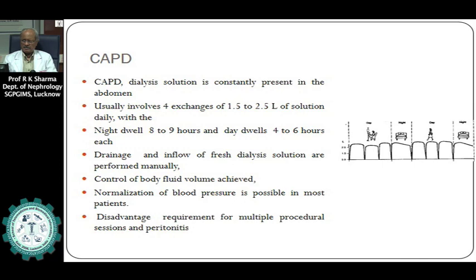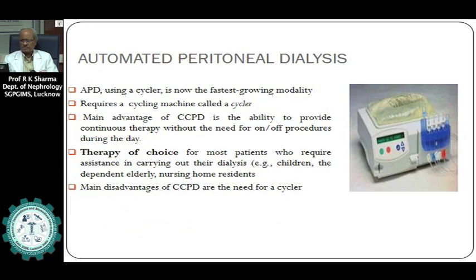The PD catheter is surgically, laparoscopically, or percutaneously placed into the abdomen. Various types of catheters can be implanted into the peritoneal cavity. The PD fluid has a similar composition to dialysate fluid, using glucose as the osmotic agent. However, there are now PD fluids containing amino acids and icodextrin—amino acids help with ultrafiltration and also provide nutrition to the patient, while icodextrin, a glucose polymer, can be used in place of glucose as an osmotic agent especially for long dwell or night dwell peritoneal dialysis.